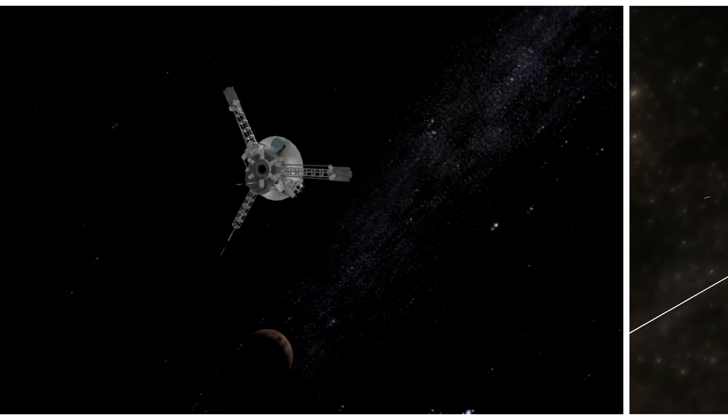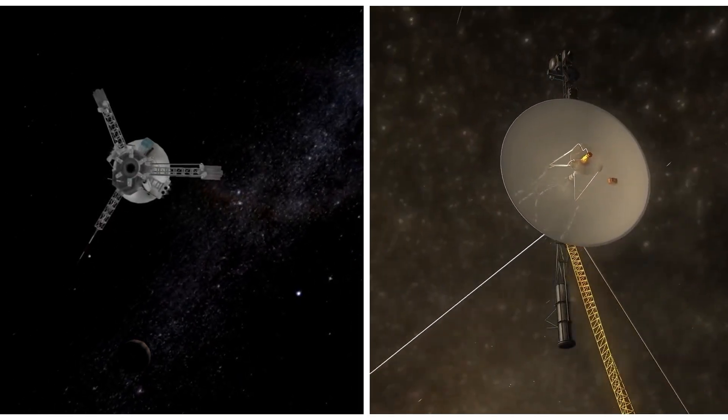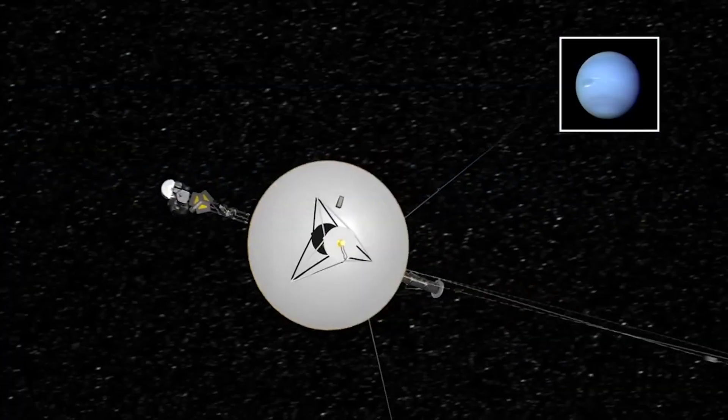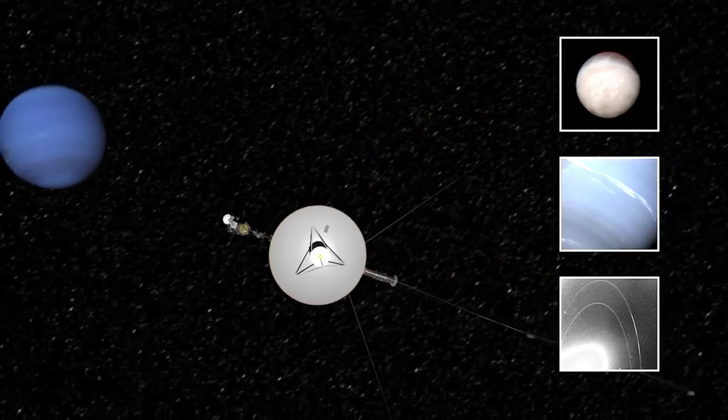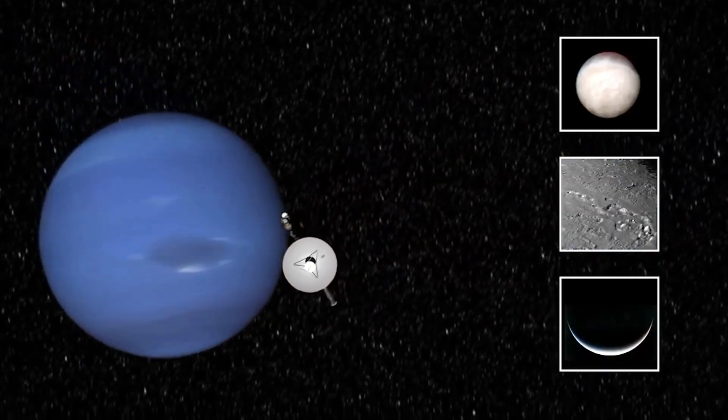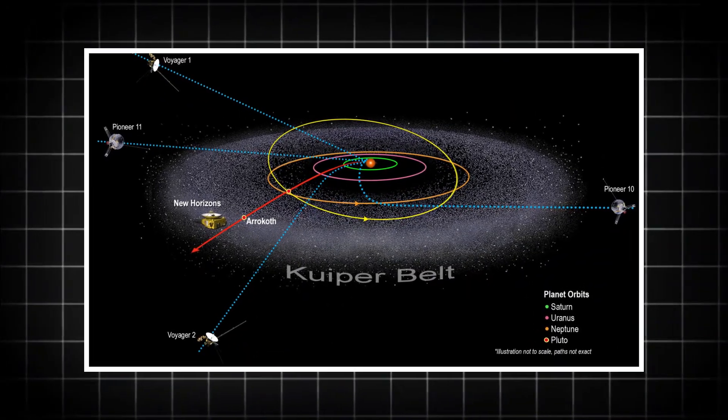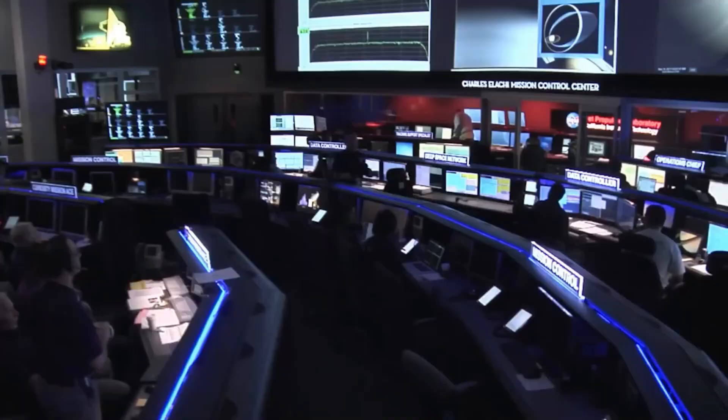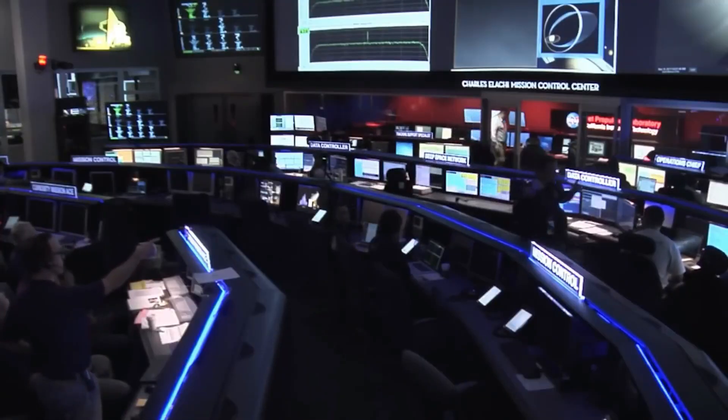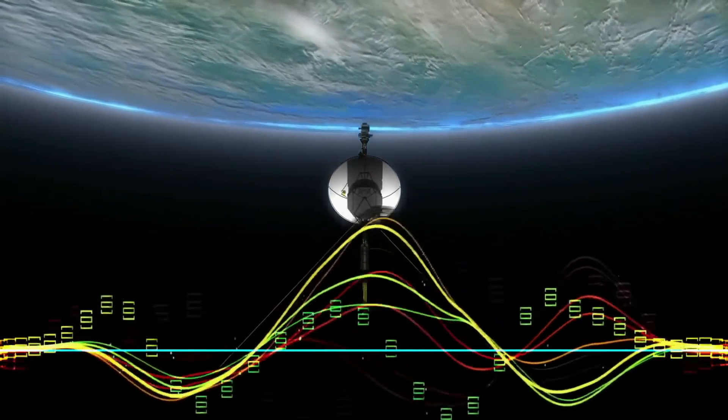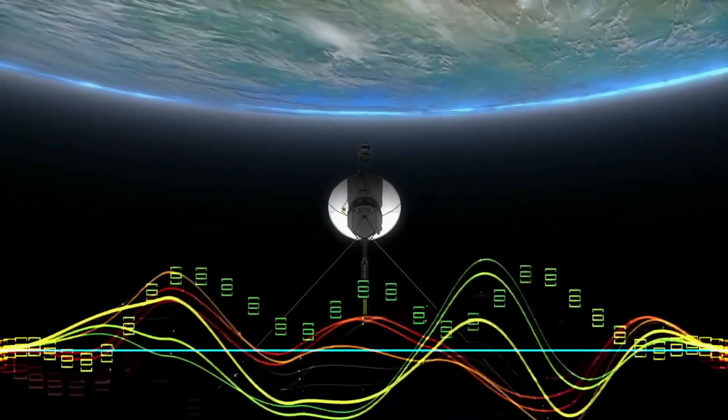NASA's Voyager 1 and 2, two of humanity's most ambitious space missions, have just sent back data that could change everything we know about the universe. What they've discovered at the very edge of our solar system is sending shockwaves through the scientific community, with implications that go far beyond the boundaries of space exploration.